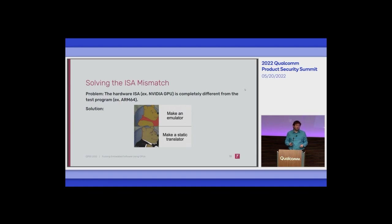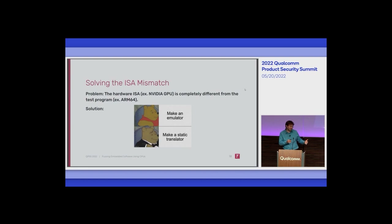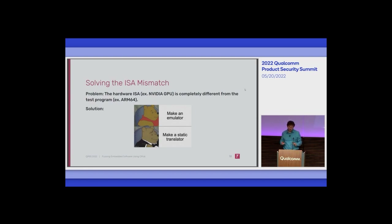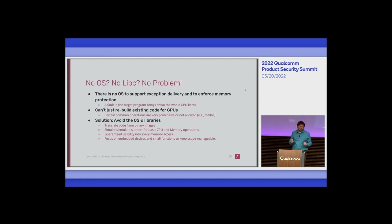First, how do we work around the instruction set architecture? The traditional way is to make an emulator. The better way — since at Trail of Bits we do a lot of program analysis and transformation work and have a lot of binary-lifting tools that take a binary and translate it to LLVM IR — is to take ARM code and use Clang's PTX backend to compile it as a GPU kernel. After some experimentation, the answer is yes. Instead of making an emulator, we make a static translator.